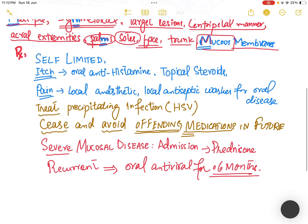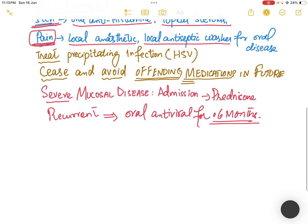How will you treat erythema multiforme? It is usually self-limited. For itching, oral antihistamines can be used with topical steroids. Pain in mucosal patients needs local anesthetic like local antiseptic washes for oral disease. Treat precipitating infections like herpes simplex virus.